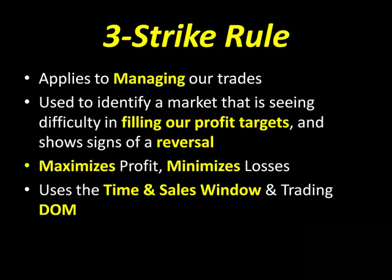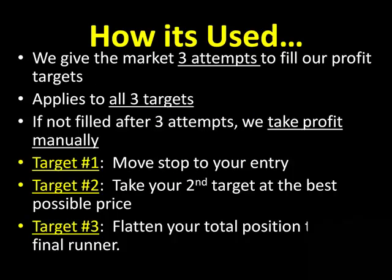The three strike rule seeks to maximize profit and minimize your losses. We use the time and sales window in our trading dome to apply this rule. We give the market three attempts — one, two, three strikes and you're out — to fill our profit targets. It applies to all three profit targets. If we don't see a profit target filled after three attempts, we then will force that profit target filled manually.